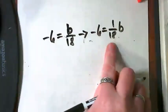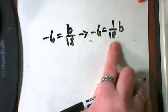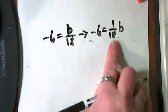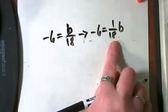So I want you to think about if this is true, in order to get that b by itself, I have to turn this one over 18 into an invisible one.